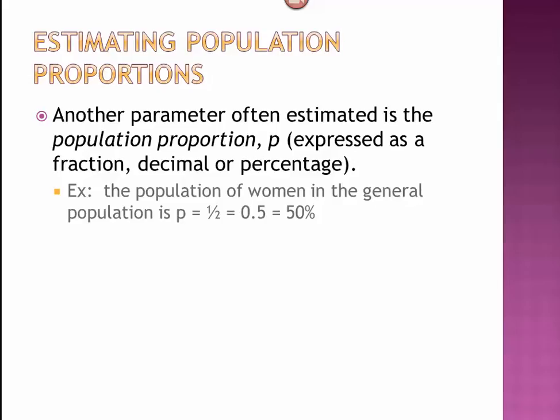For example, the population of women in the general population is one-half, 0.5, or 50%. That 50% represents a parameter, and we represent that population parameter with the letter p.